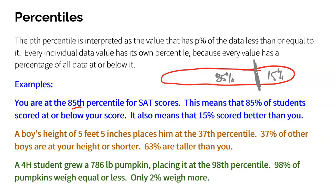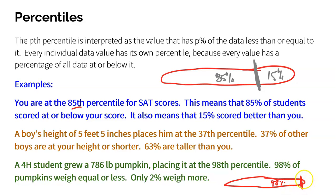Another example: a 4-H student grew a 786-pound pumpkin, placing it at the 98th percentile. That means if we look at all the pumpkins grown, we are at the very tippity top — 98% of pumpkins are below that weight. Only 2% are above it. So that clearly tells us we're at the very, very high end. These are what percentiles are — they tell you the percentage of data at or below you.